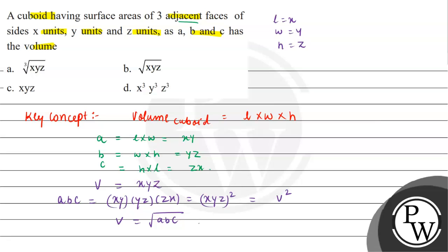So for this case, B is the correct option that says square root of XYZ is equal to volume of cuboid. This is the final answer. I hope you understood the explanation. All the best.